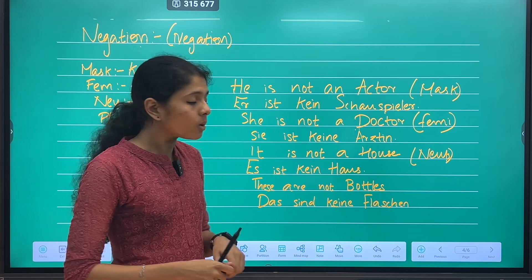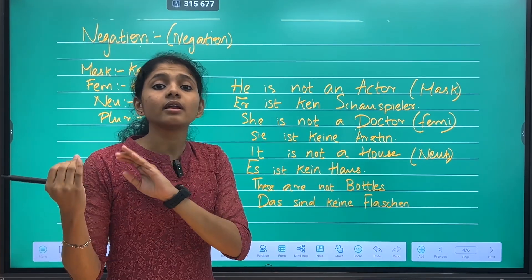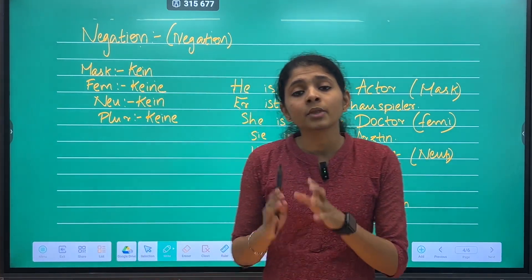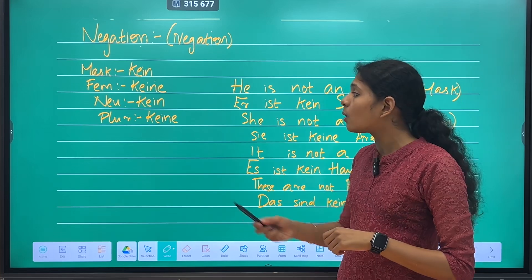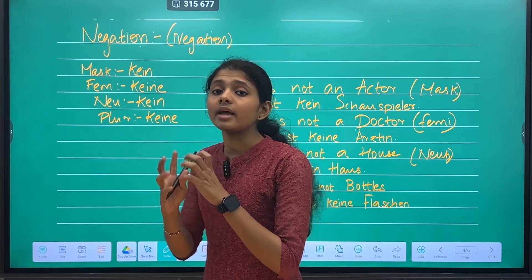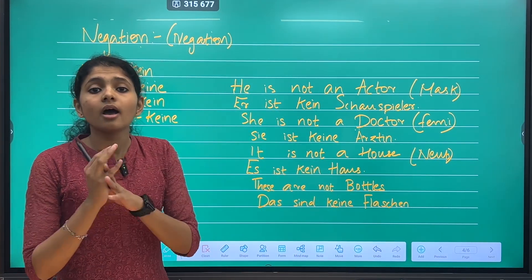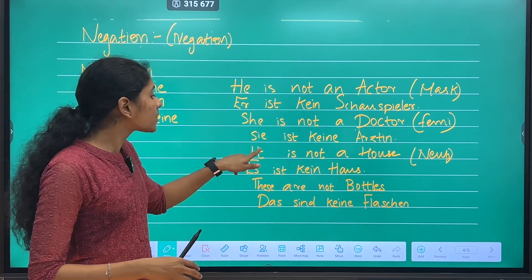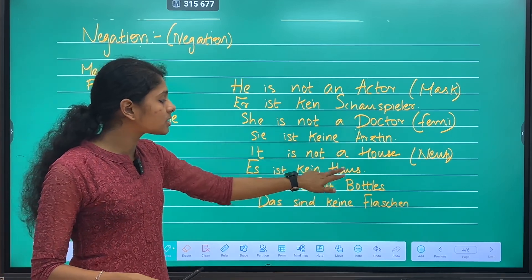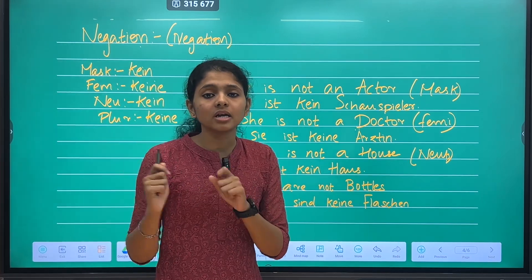Next, we'll talk about neuter. It is not a house. Das Haus - that is a neuter case house. If we start talking about the neuter case with negation, the neuter case uses 'kein' because in the neuter case, the article is 'das', so we use 'kein'.